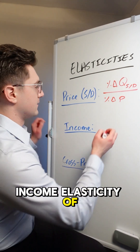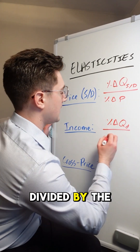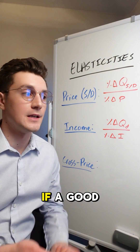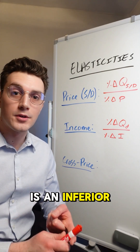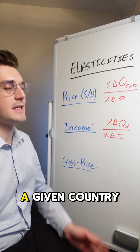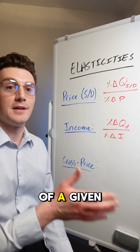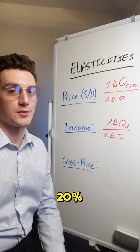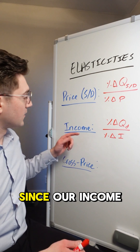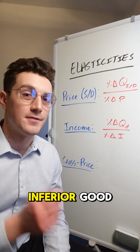Income elasticity of demand refers to the percent change in quantity demanded of a given good divided by the percent change in income. We use this formula to determine if a good is an inferior good, a luxury good, or a normal good. For example, if income in a given country increases by 5% and the quantity demanded of a good decreases by 20%, then negative 20 divided by positive five is negative four. Since our income elasticity of demand value is negative, that means we're working with an inferior good.